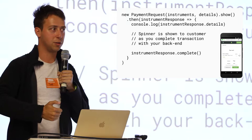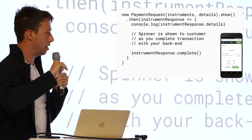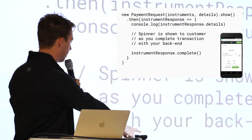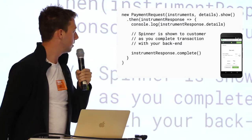Basically when the consumer presses the Pay button, it starts a spinner. The JavaScript waits for you to call instrument response complete, and then it closes the dialogue.